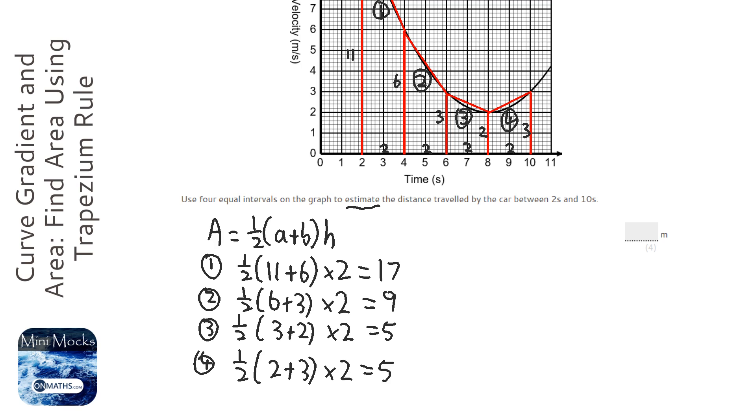So to work out the total distance, 7 plus 9 plus 5 plus 5. That's 17, sorry. So 17 plus 9 plus 5 plus 5. I don't know why I'm using a calculator for this as well, but it's here so we might as well use it. So it's going to be 36.